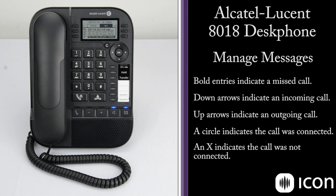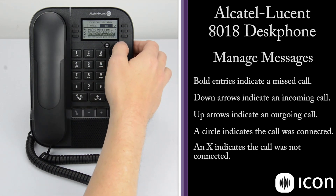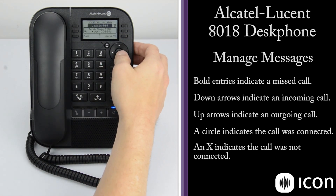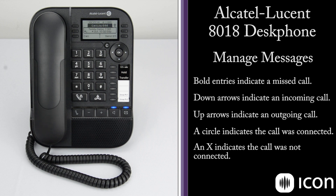In the all call history, a bold number indicates a missed call. Incoming calls show an arrow pointing down — an X means the call was not completed, while a circle indicates that it was. An up arrow indicates an outgoing call. We can also dial directly from the call history by scrolling, selecting an entry to view the call details and time, and selecting call.